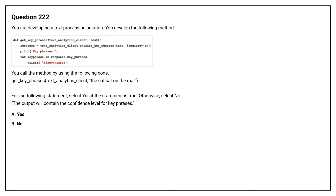Question number 222. You are developing a text processing solution. You develop the following method. You call the method by using the following code: get_key_phrases(text_analytics_client, 'The cat sat on the mat.'). For the following statement, select yes if the statement is true, otherwise select no. The output will contain the confidence level for key phrases.